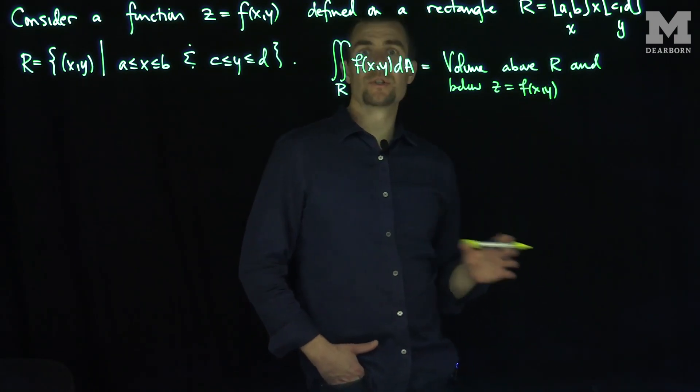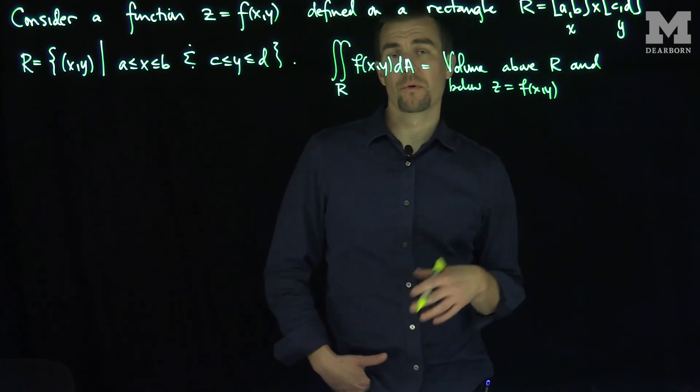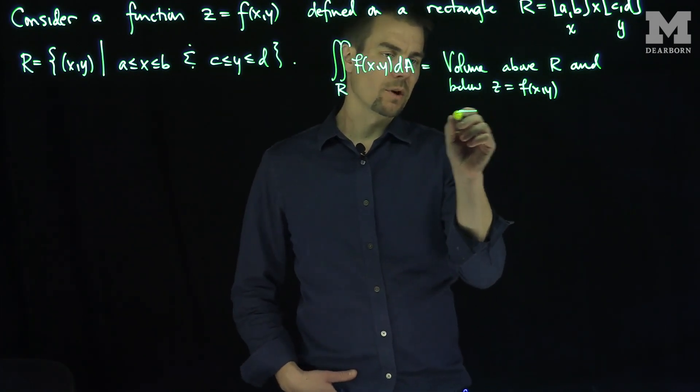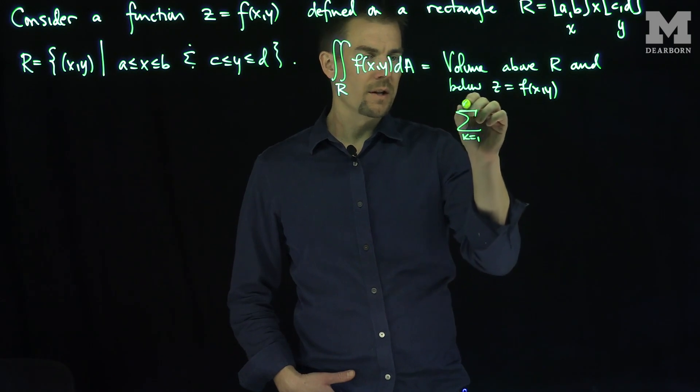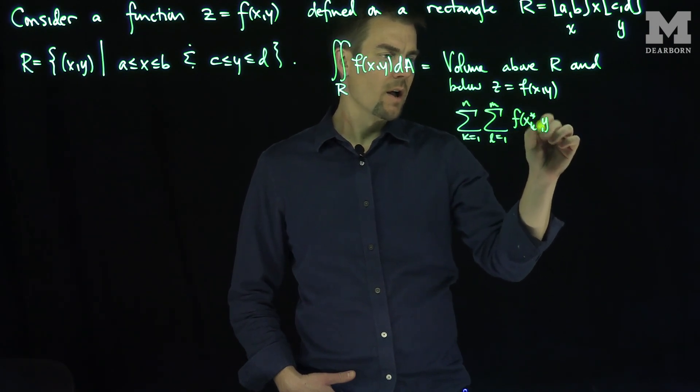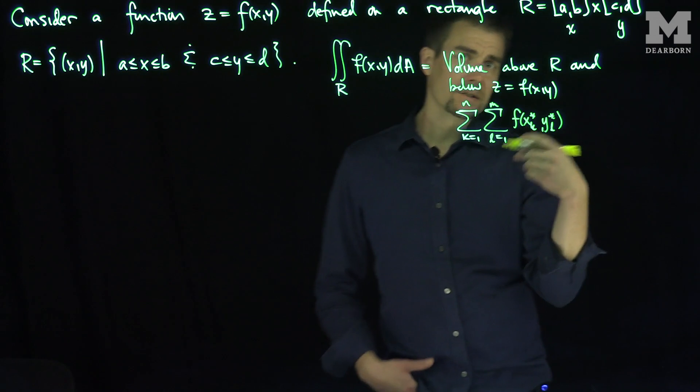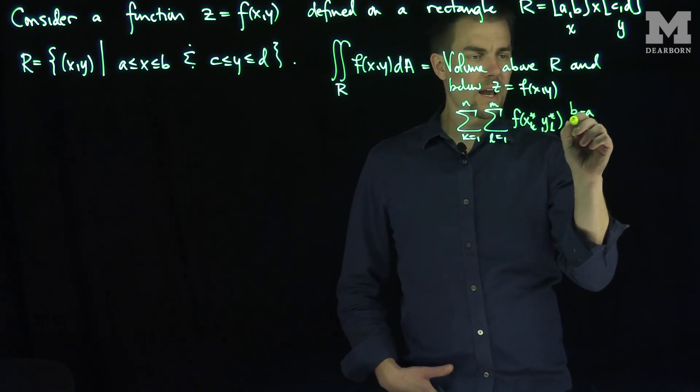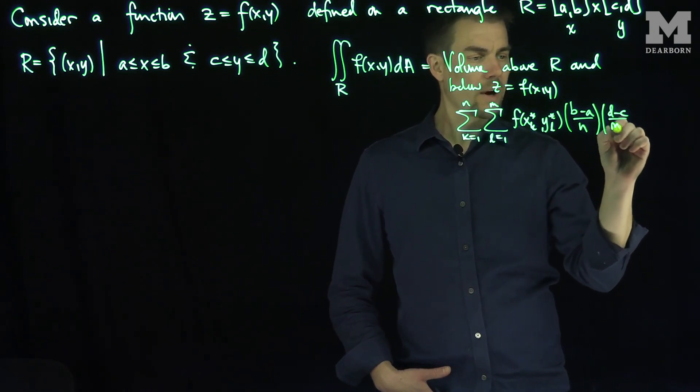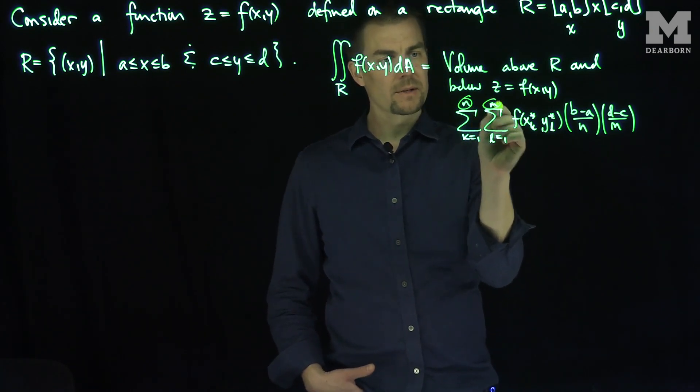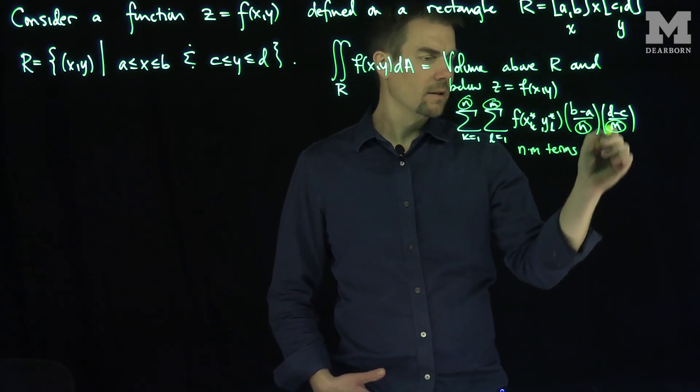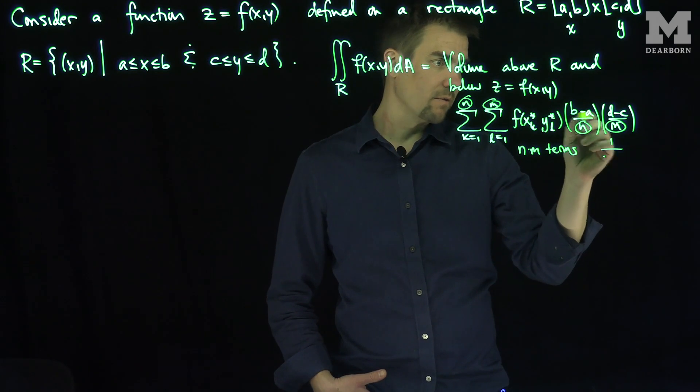Now, when we transition to higher dimensional integrals, we'll move away from this notion of volume and start thinking of these things as average values. Because if we recall what the approximation was, the approximation was the sum k goes from 1 to n, sum l goes from 1 to m, of f of x_k star, y_l star, and then I had delta x delta y, which was (b minus a) over n times (d minus c) over m. Now, the total number of summands I have here is m times n, so there's n times m terms, and we're dividing by, up to this factor of (b minus a)(d minus c), m times n.